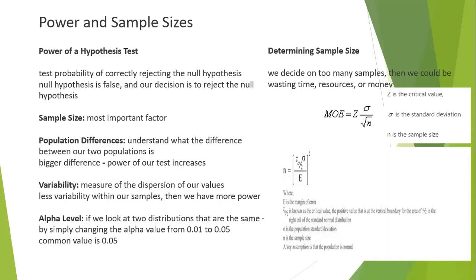A student asks for clarification: if the z is a critical value, does an error fall under the same parameter going to the critical value? The instructor confirms: before taking a sample size, you finalize your critical value. For example, if 98% is your critical value, your z value is set at 98. For a process requiring 100%, the critical value will be 100, and you finalize your z value based on that.